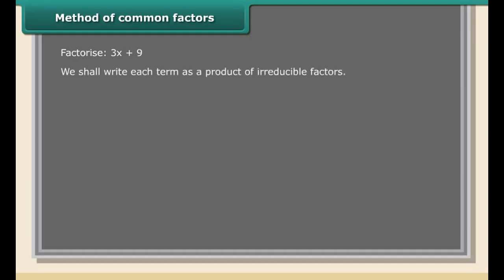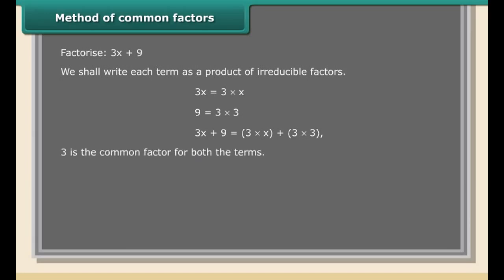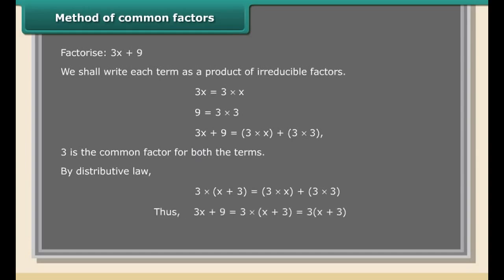Method of common factors — factorize 3x + 9. We write each term as a product of irreducible factors: 3x = 3 × x and 9 = 3 × 3. So 3x + 9 = 3 × x + 3 × 3. Here 3 is the common factor for both terms. By the distributive law, 3x + 9 = 3(x + 3). The factors are 3 and (x + 3), and these factors are irreducible.